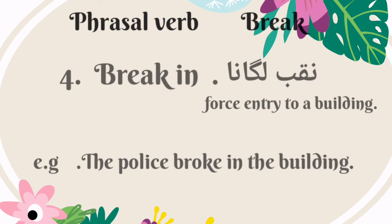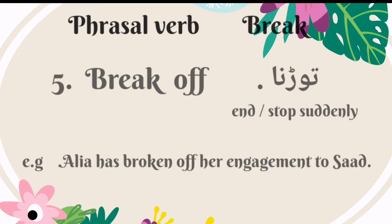The fourth phrasal verb is 'break in.' Its meaning is force entry to a building — Urdu mein is ka matlab hai naqab lagana. For example: the police broke in the building. The fifth phrasal verb is 'break off.' Its meaning is to end or stop suddenly — Urdu mein is ka matlab hai torna. For example: Alia has broken off her engagement to Saad.